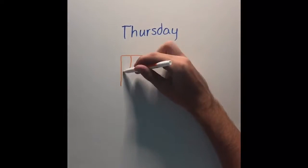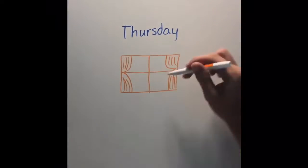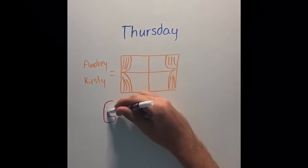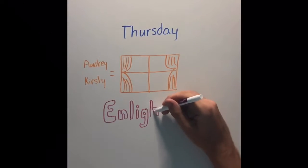She's always known that Saturdays are yellow and Thursdays are dark blue. The names Audrey and Kirstie have the texture of folded curtains and the word enlightenment is magenta with a bubble-like texture.